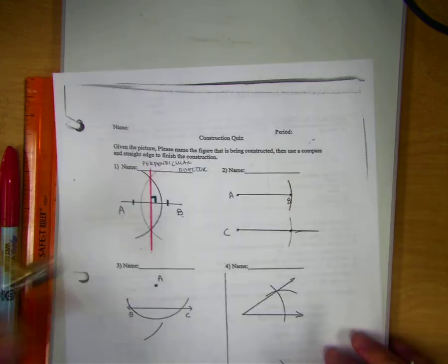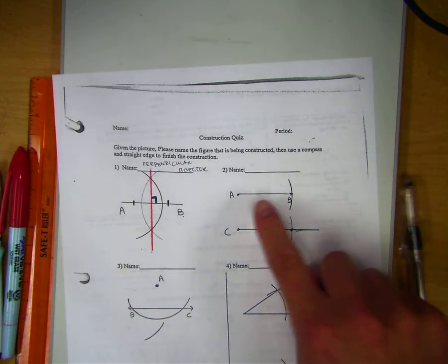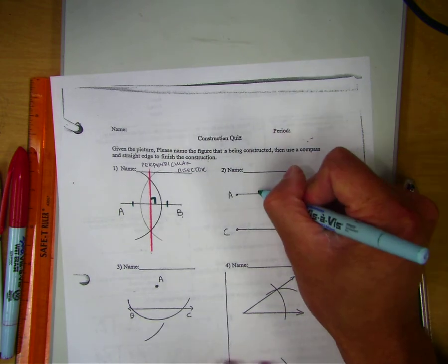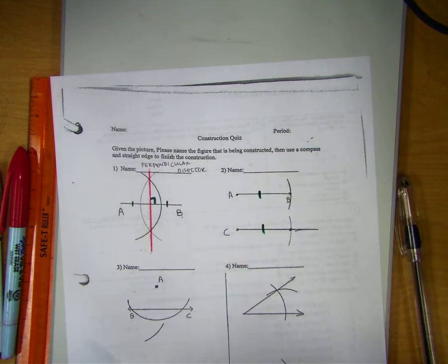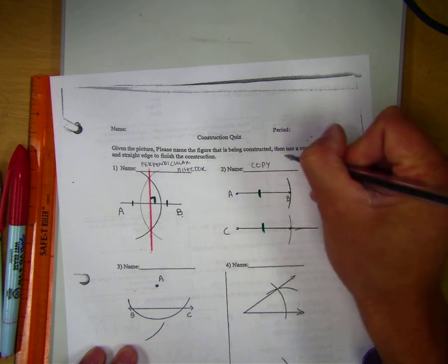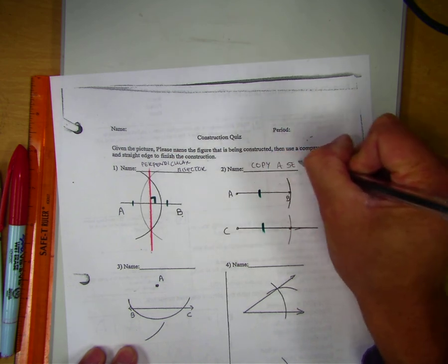Putting a point there. So you are having these two segments here are congruent. So this one's called copying a segment, or duplicating a segment.